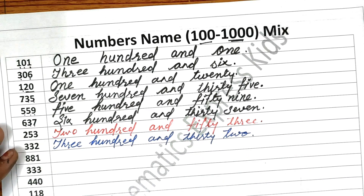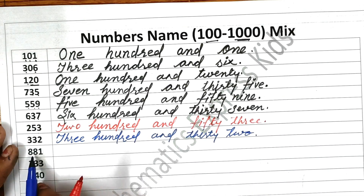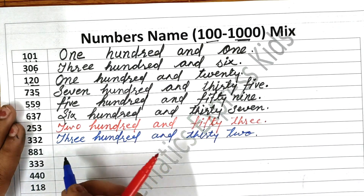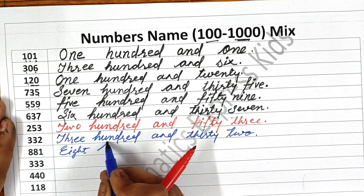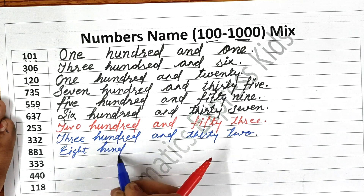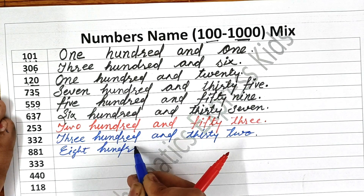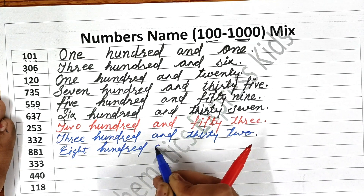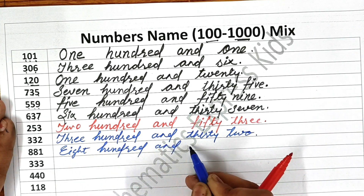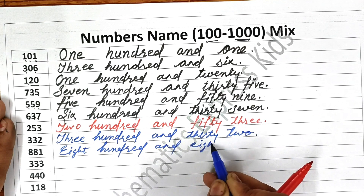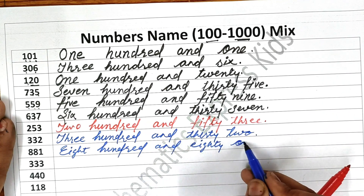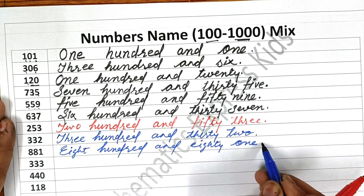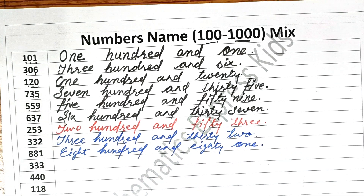Now the next one is eight hundred and eighty-one. Write down eight first — E-I-G-H-T — eight hundred — H-U-N-D-R-E-D — eight hundred and eighty — E-I-G-H-T-Y — eighty. Okay, one — O-N-E. I hope this is clear to you.